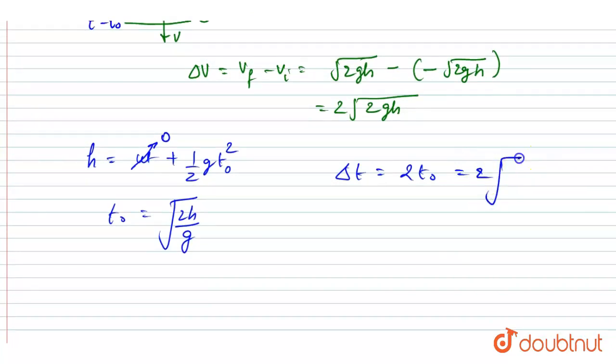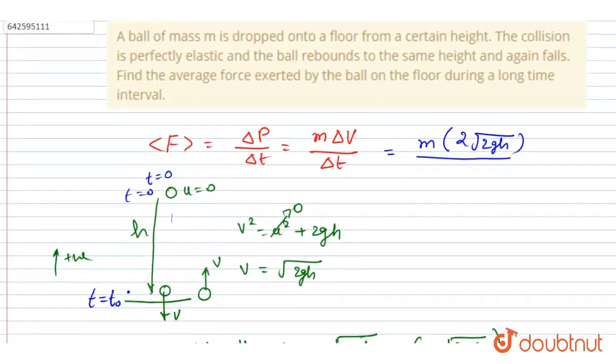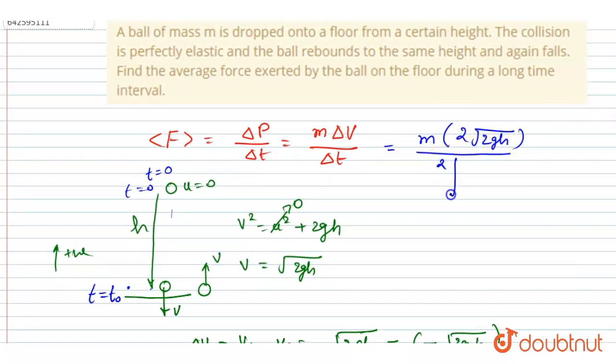That is 2√(2h/g). So just put that also here. So 2√2 will get cancelled out here if you see, and √h will also get cancelled.